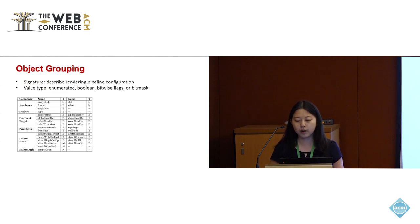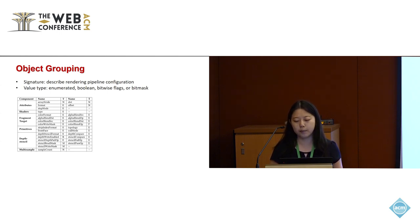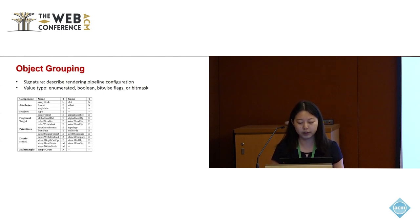To describe the rendering pipeline configuration for an object, it is necessary to specify the contents of several components in the signature, including attributes, shaders, fragment targets, primitives, depth-stencil, and multi-sample. The table displays the names and data types of specific values for each component.